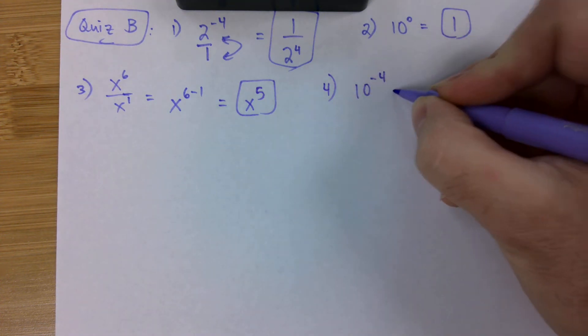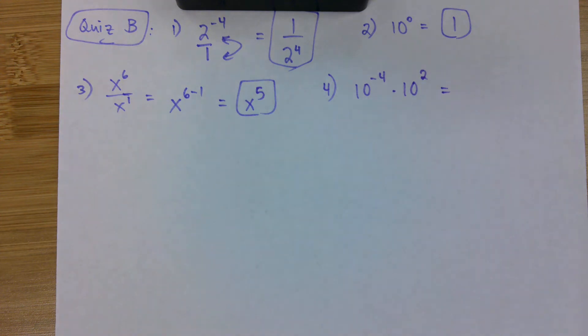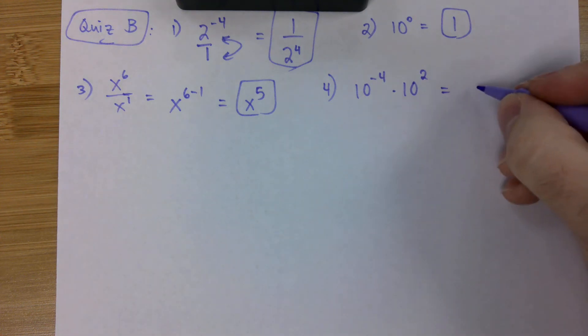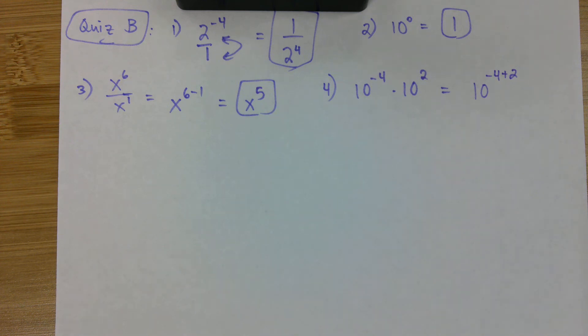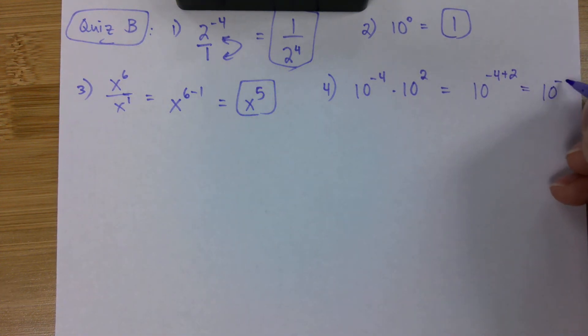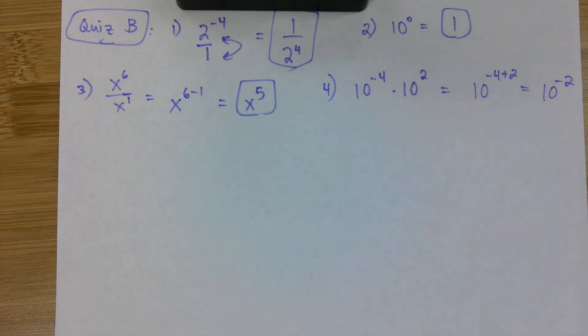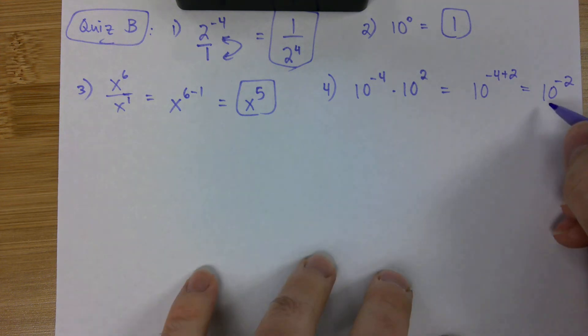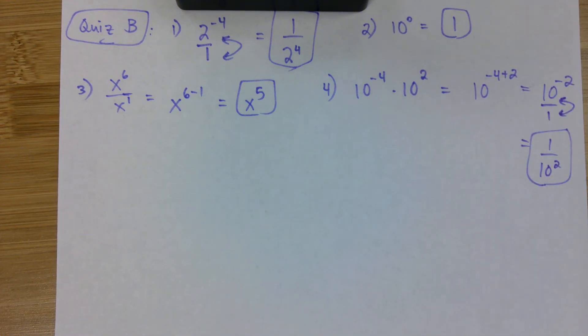Number four, we got 10 to the negative four times 10 to the two. We're going to use the product rule here. 10 to the negative four plus two gives us 10 to the negative two. And then you look at your answer choices and you go, oh, there is no 10 to the negative two. So, my answer must not be done. You put a one and you flip it and you make it positive. One over ten squared. Put it over one, flip it, make it positive.